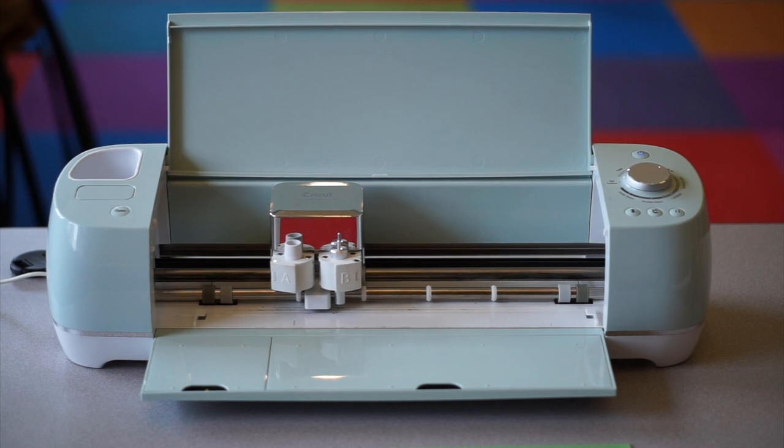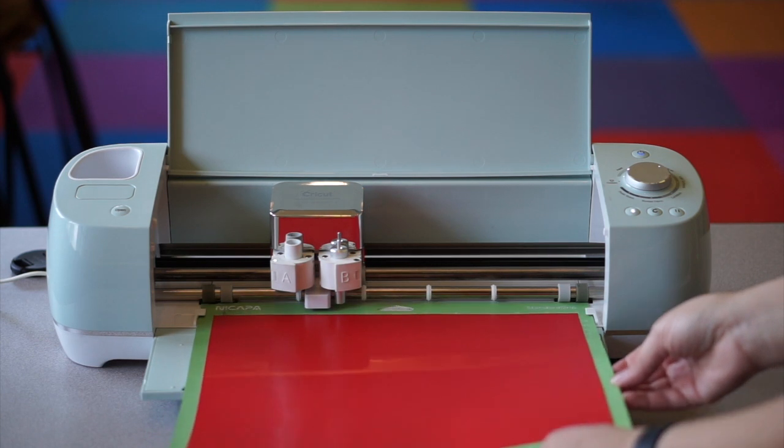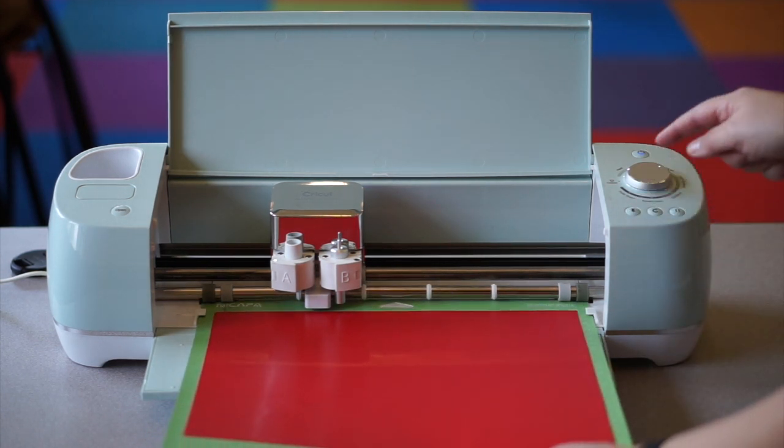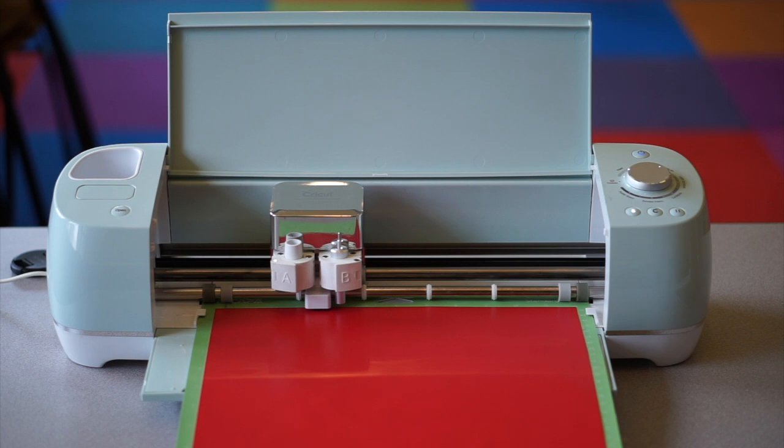To feed the mat into the Cricut, you just want to make sure you put the mat under the little notches it has. Push with a little bit of pressure and just hit the little arrows, and it'll accept the mat.